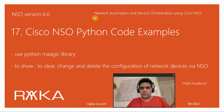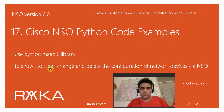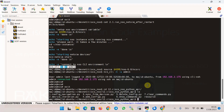Welcome to another video of the course Network Automation and Service Orchestration using Cisco NSO. In the previous section we started using the Python MAAGIC library to connect to Cisco NSO and navigate device configuration. In this section we will see Python code examples to show, clear, change, and delete the configuration of network devices via Cisco NSO using the MAAGIC library.